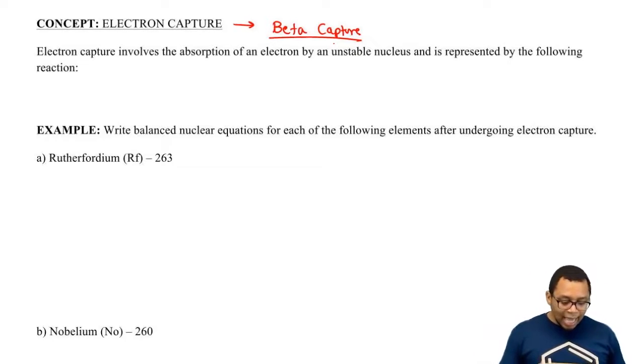So here we're going to say electron capture involves the absorption of an electron, which remember we saw as this symbol, by an unstable nucleus and is represented by the following reaction.